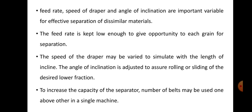Feed rate, speed of draper, and angle of inclination are important variables for effective separation of dissimilar materials. The feed rate is kept low enough to give each grain an opportunity for separation — in order to allow every particle to contact the draper surface, we keep feed rate slow so that, according to their surface characteristics, they travel either toward the downward end or toward the top end. We must keep an optimum feed rate to achieve proper separation.